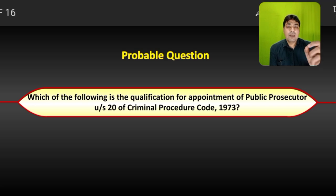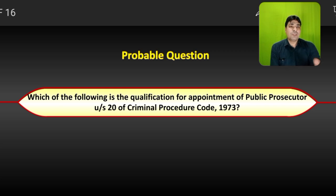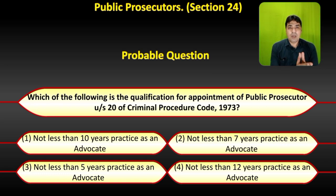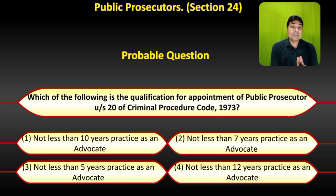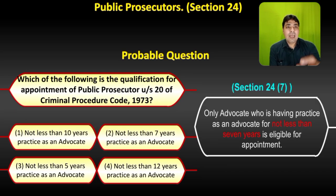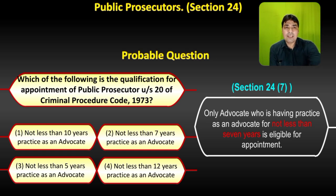Another probable question: What is the qualification for appointment of Public Prosecutor under section 24 of the Criminal Procedure Code 1973? Options: not less than 10 years; not less than 7 years; not less than 5 years; not less than 12 years. The correct answer is option 2 — not less than 7 years of practice as an advocate.